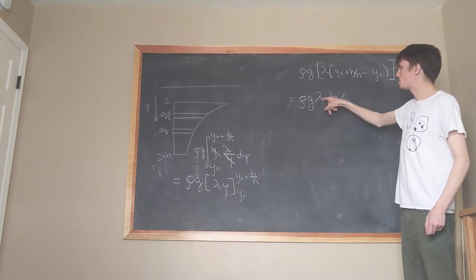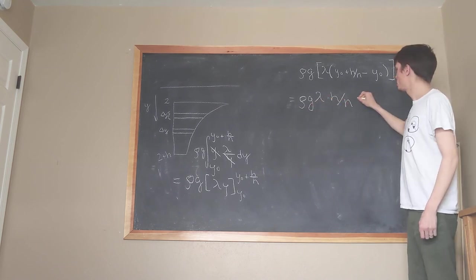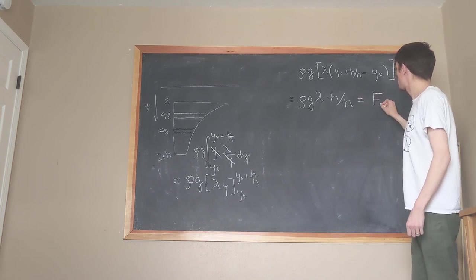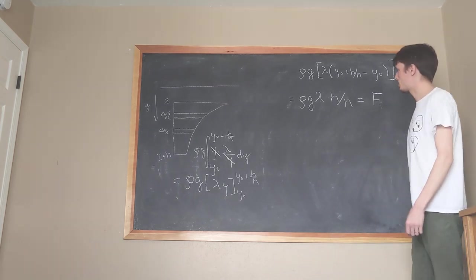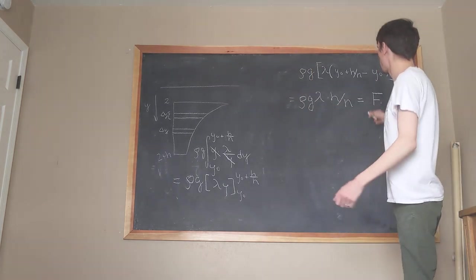Constant, constant, constant, constant, constant, constant. This is equal to some constant f_i. We just call it f because it's constant. There's no dependence on anything. That's the constant force on each particular strip.